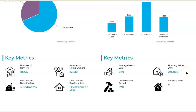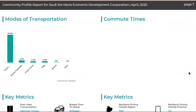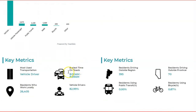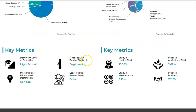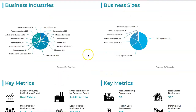When it comes to housing prices, it's around $235,086 on average. The majority of people in Sault Ste. Marie own a vehicle — that's the main way of transportation — with some options for public transportation, vehicle passengers, and walking. The busiest time on the road is between 8 AM and 8:59 AM. When it comes to education, the majority of people are at the high school level, and the most popular field is engineering. The dominant level of education in the community is high school.